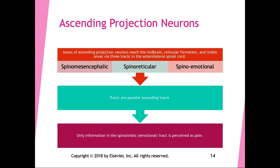The ascending projection neurons reach the midbrain, the reticular formation, and the limbic areas via three tracts in the anterolateral spinal cord. The spinal mesencephalic tract — 'spino' means it starts in the spine, 'mes' means mid, 'encephalic' means brain — goes from the spine to the midbrain. The spinal reticular tract goes from the spine to the reticular formation. The spinal emotional tract, formerly called spinal limbic, goes from the spine to the limbic areas, the seat of our emotions.